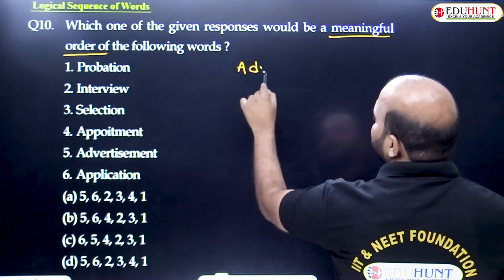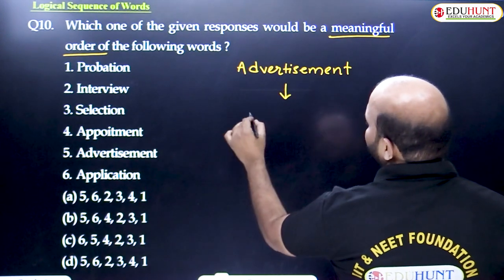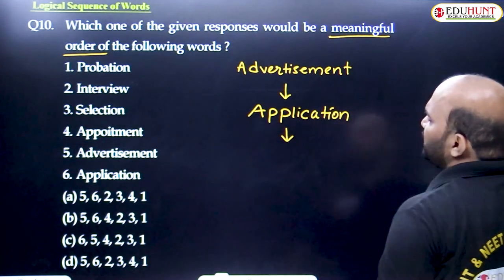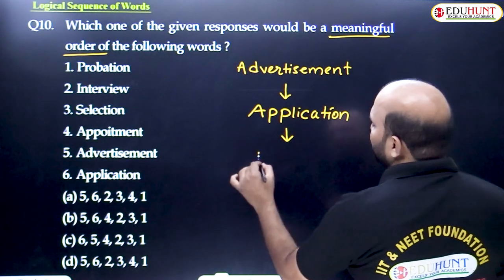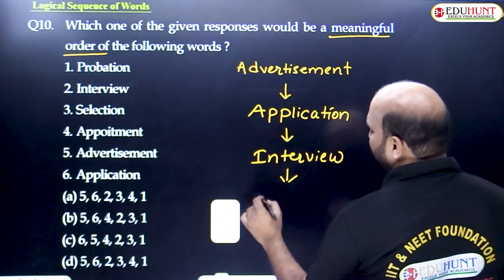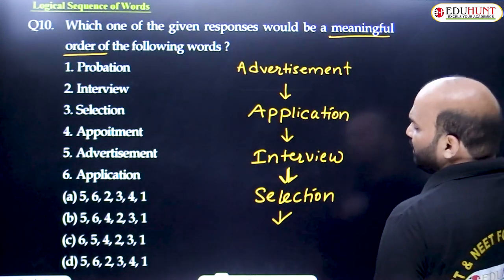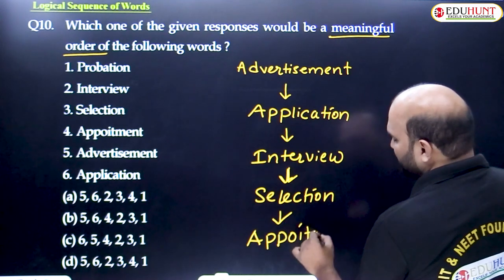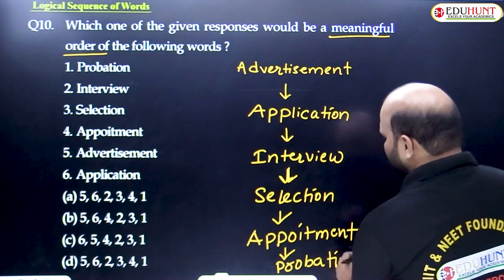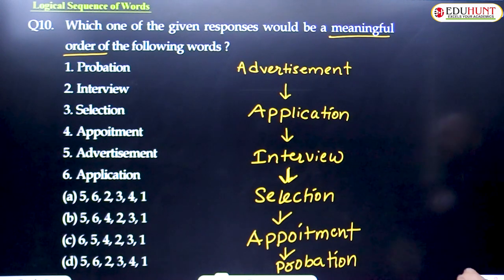Advertisement comes first. When we have to choose a job, we see the advertisement, then we submit the application, then there is an interview, after the interview you get the selection letter, then after selection you receive an appointment letter, and finally the probation period is the last step. This is the logical sequence.